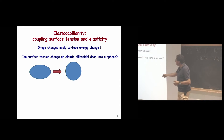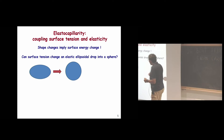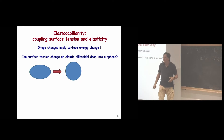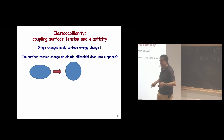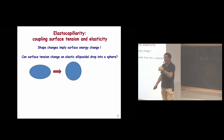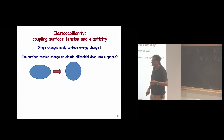First question: if I make an egg shape out of a soft gel and unmold it, will surface tension make it spherical, like for a liquid? For a liquid, this always happens — surface area is reduced going from an egg to a sphere of equal volume. Note that most soft materials are soft but incompressible, so shape changes can be thought about similarly to fluids. So can this happen?